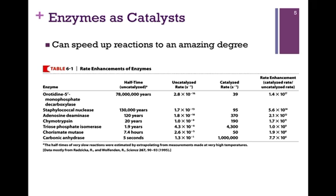So the next question is, how well do they work? They can speed up reactions to a rather amazing degree. Here's a table from your book representing the rate enhancement of enzymes. The first column is the name of the enzyme, the second column is the half-time, the third column is the rate of the uncatalyzed reaction — that is, how many times it happens per second. The next column is the catalyzed rate, and then the last column is the rate enhancement: the catalyzed rate divided by the uncatalyzed rate — how much faster did the reaction go?